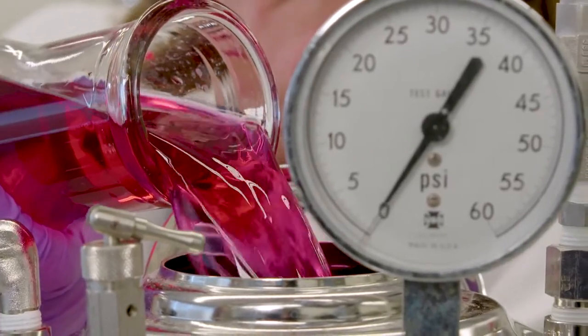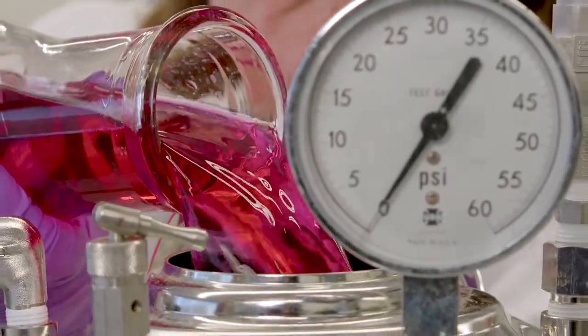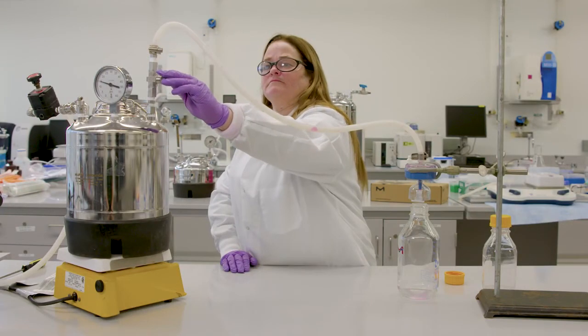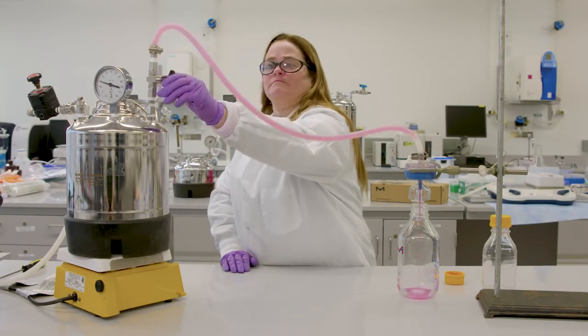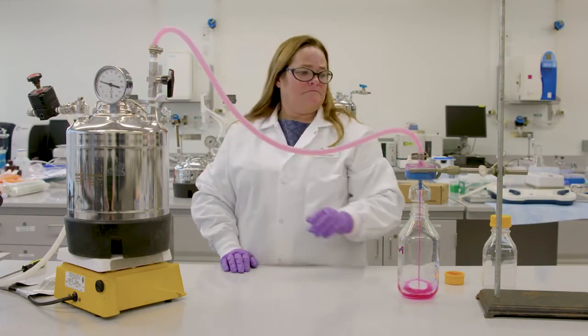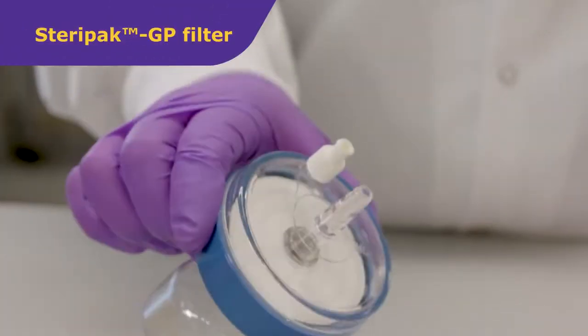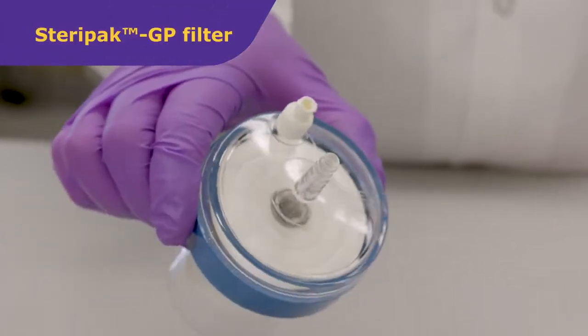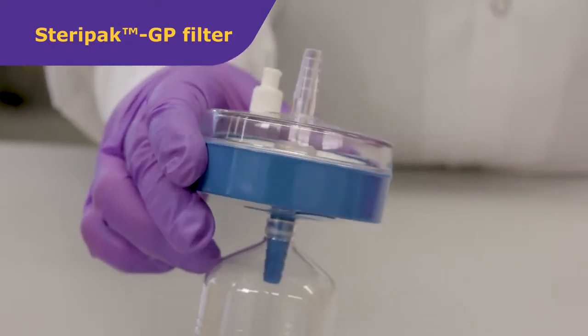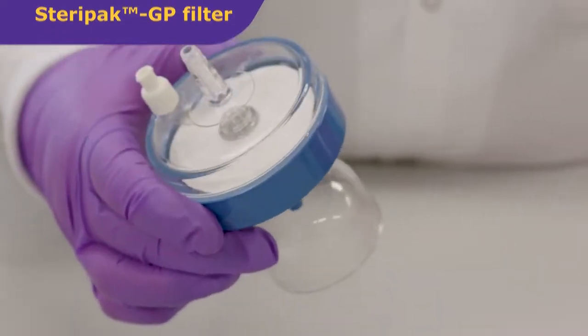We will show you the steps on how to filter sterilize large volumes, 10 to 20 liters, of simulated tissue culture media with a pressure driven filter unit called the SteriPak GP filter. Devices containing 100 square centimeters and 200 square centimeters of filtration membrane.